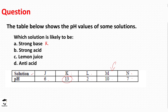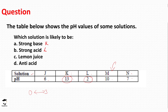Solution L is a strong acid. Next, which solution is lemon juice? Lemon juice has acidic properties — that's why it tastes sour — but it is not a very strong acid. Weak acids range from pH 4 to around 6. Therefore, lemon juice corresponds to solution J with a pH of 6, which is the weakest acid in the table.